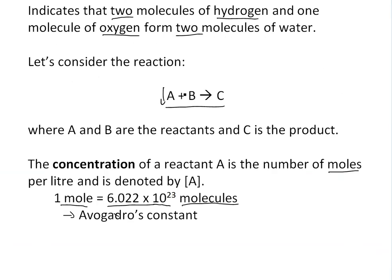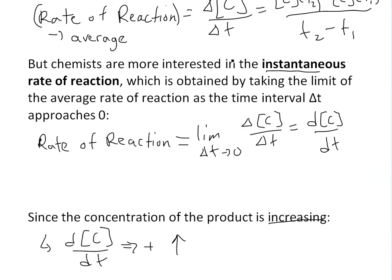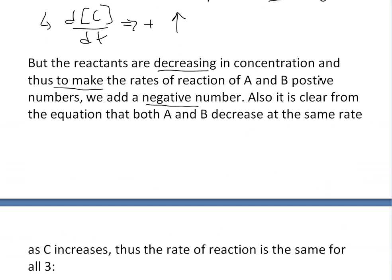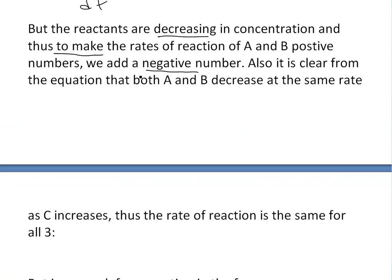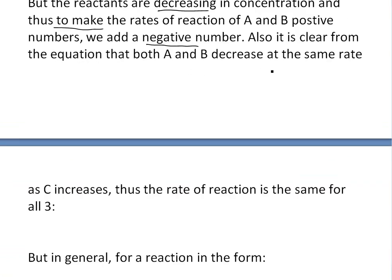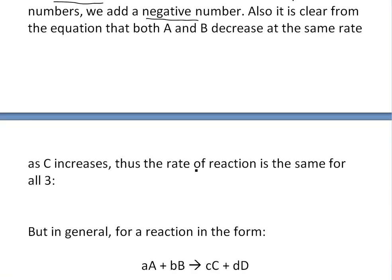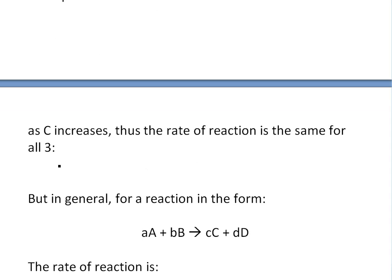As you decrease, they decrease at the same rate, because the only way that A is going to be decreasing is if it's reacting with B with the same amount of molecules or moles, and then it's going to be producing the same amount of moles of C. So the reaction rates will be the same for all three of them. It is clear from the equation that both A and B decrease at the same rate as C increases.